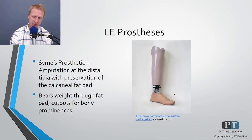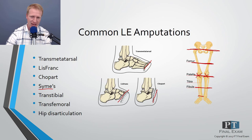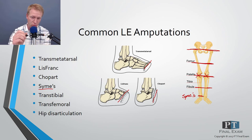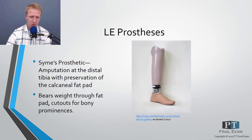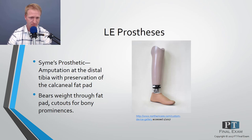With lower extremity prostheses, the lower the amputation level, the more stable and active the individual. A Symes prosthesis cuts at the malleoli but maintains the calcaneal fat pad, repositioning it to the distal tibia so the person can bear full weight through it. Essentially, it's just a foot attached to the end of the distal tibia.